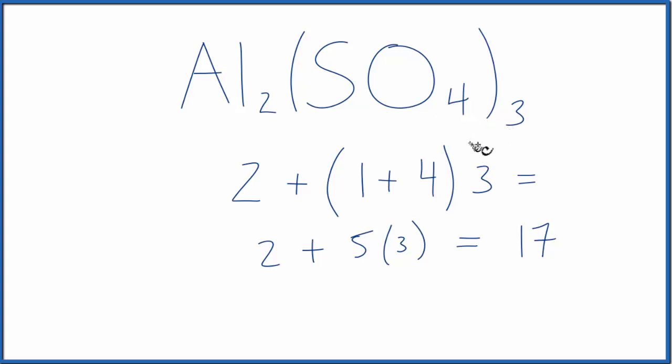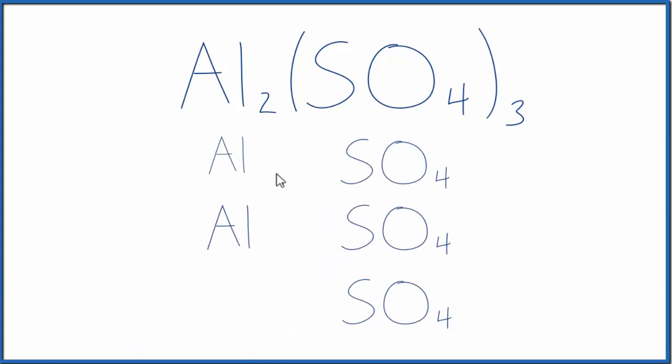There's another way you can think about it as well. And to help you visualize kind of how these parentheses work here, let's take a look at this. So you can think of aluminum sulfate as being made up of these 2 aluminum atoms, and then 3 of these sulfate ions here, this SO4, here's 1, 2, 3. So you have 5 atoms in each of these, 3 times the 5 gave us the 15, we added the 2, we got 17 atoms in Al2(SO4)3.